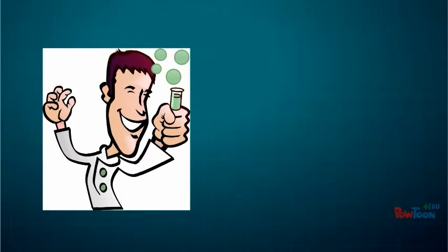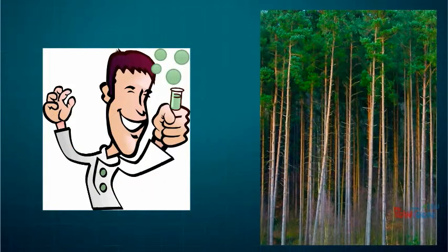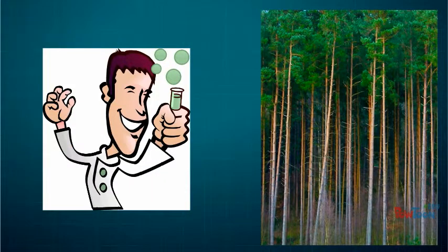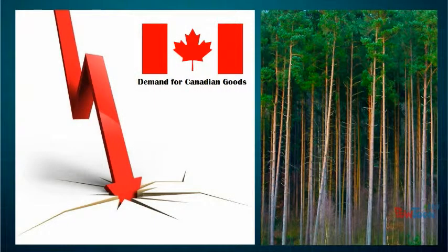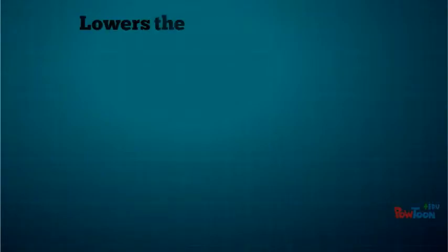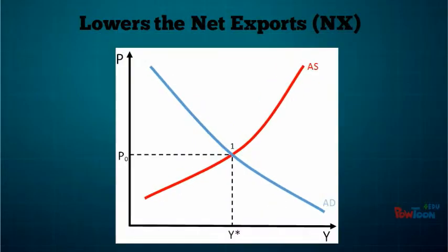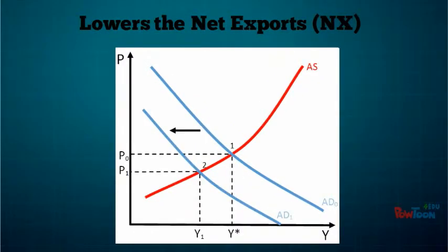A Swedish scientist has invented a substance that enables the growth of large forests in as little as one month. This invention has significantly decreased the demand for forest products from Canada. The decreased demand has lowered net exports and shifted the aggregate demand function to the left.